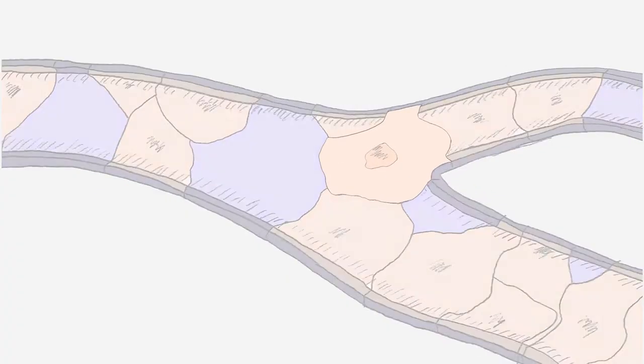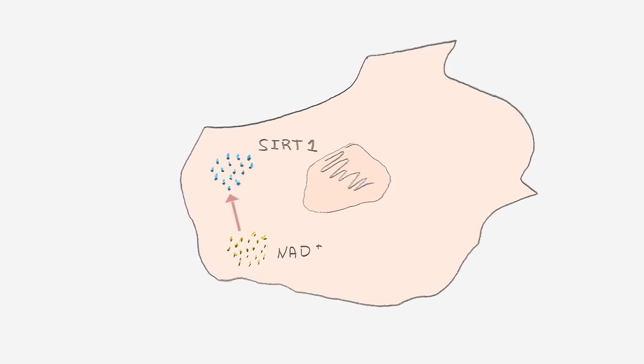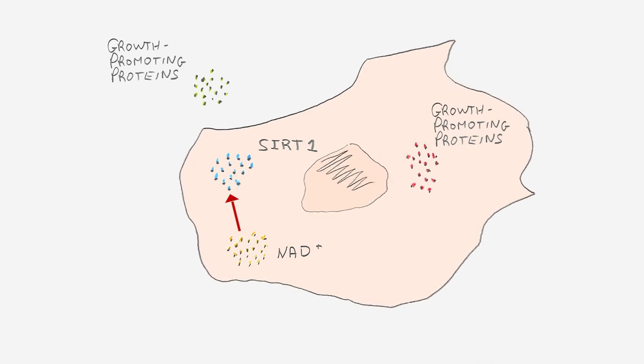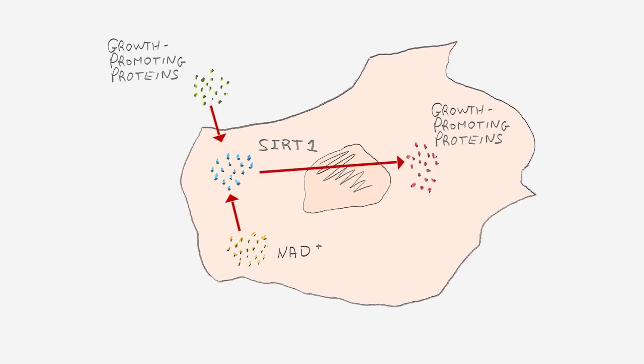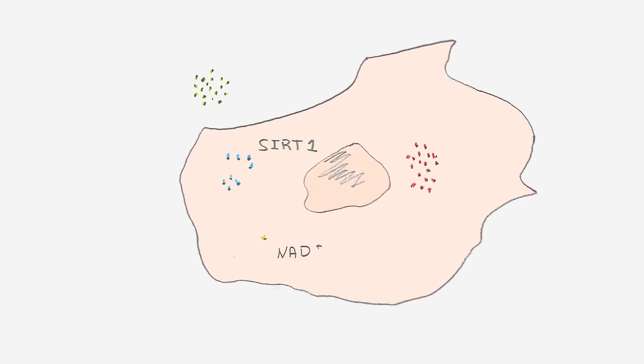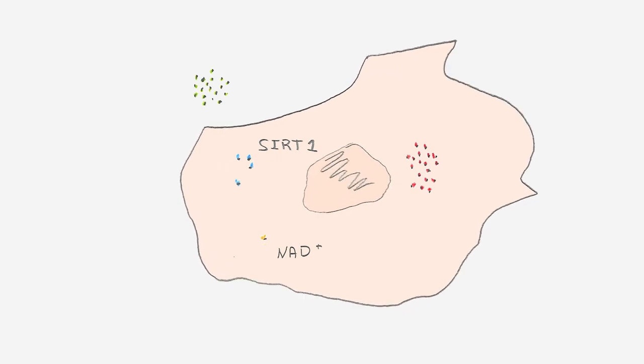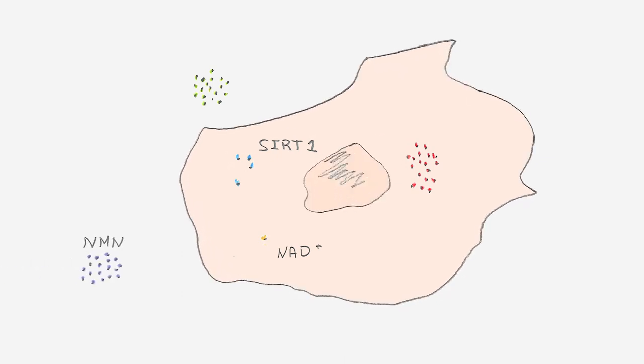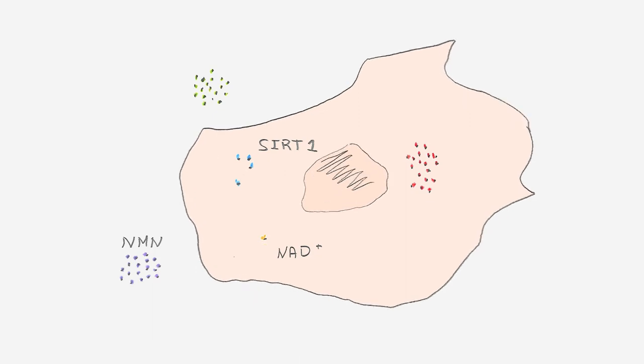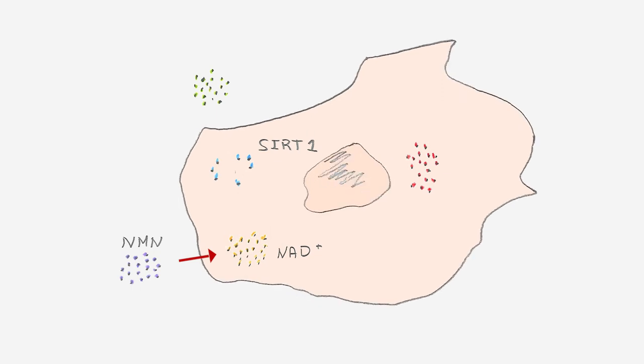The two key players in the crosstalk between blood vessels and muscles are a molecule called NAD and a protein called SIRT1. NAD boosts SIRT1, which in turn enables the conversation between muscles and blood vessels. But both NAD and SIRT1 decline as we age. They can no longer perform their role as the interface between muscles and blood vessels. In our new study, we gave mice NMN, a chemical compound commonly found in the body and previously shown to boost NAD levels, which in turn boosts SIRT1.